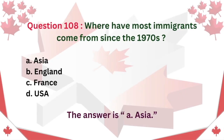Question 108: Where have most immigrants come from since the 1970s? A. Asia. B. England. C. France. D. USA. The answer is A: Asia.